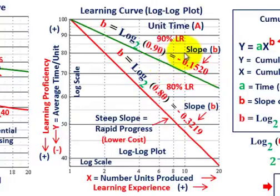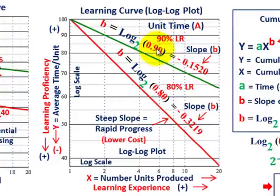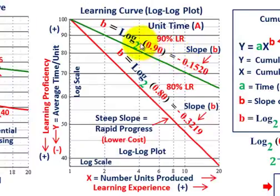The key with the log-log plot is easy to see. These are negative slopes, and the slope value b is the exponent we raised our function to in y = ax^b. B is our learning rate, and b equals the log base 2 of the learning rate. For the 90% learning rate: b = log base 2 of 0.90, which gives a slope of minus 0.1520.